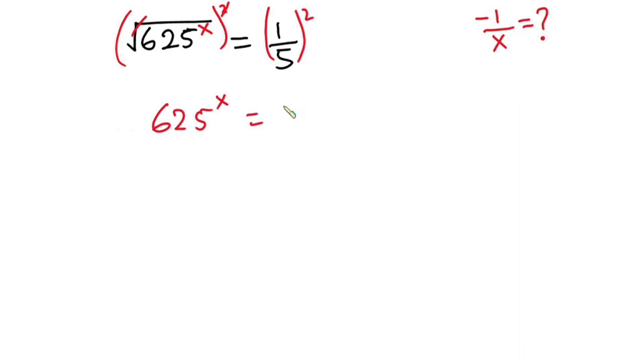625 could also be written as 5 to the power 4, and this is to the power x, and everything is equal to 1 over 25. Now from indices I can multiply this x by this 4 straight away.